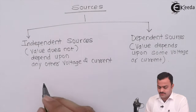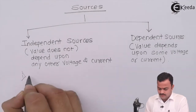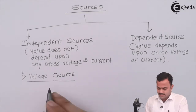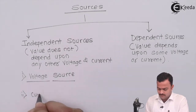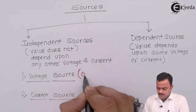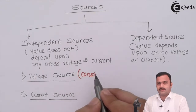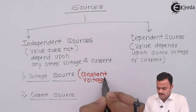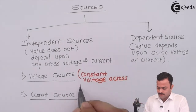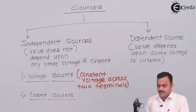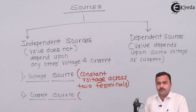There are two types of sources under independent sources. One is the voltage source, which provides a constant voltage irrespective of any amount of current taken from it — meaning it maintains a constant voltage across two terminals. The other is the current source, which irrespective of the amount of voltage across it will always maintain constant current in the circuit.